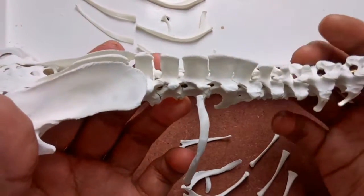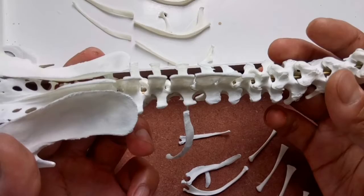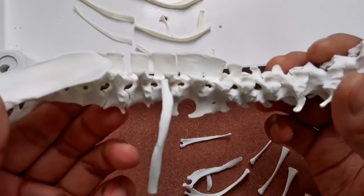Begin articulating the ribs in the way that we have explained. Start with articulating the seven thoracic ribs.